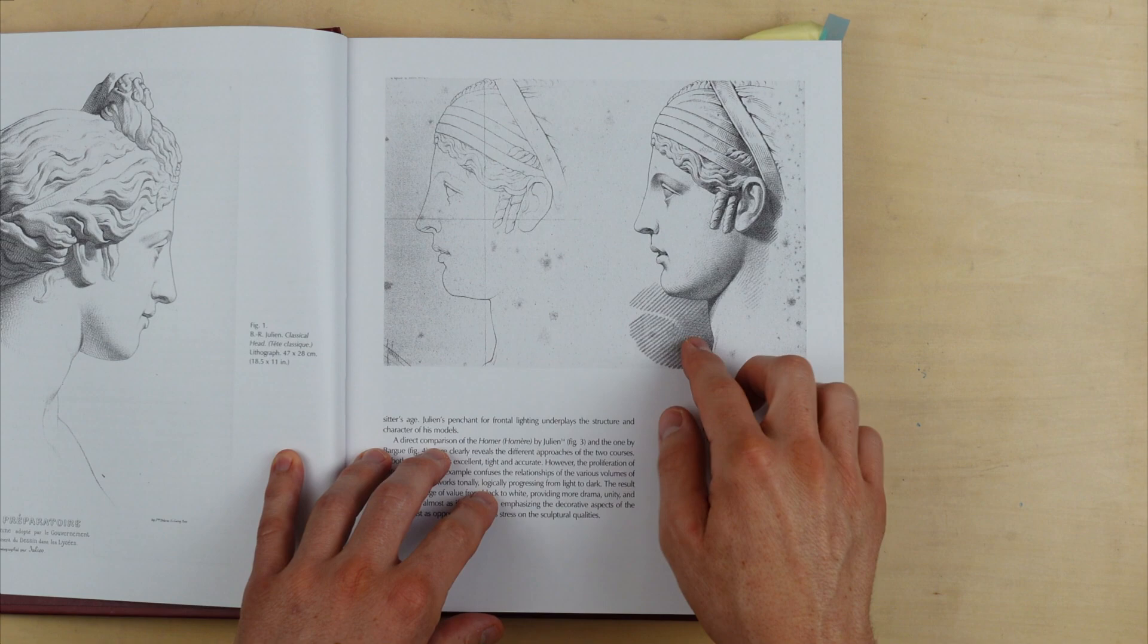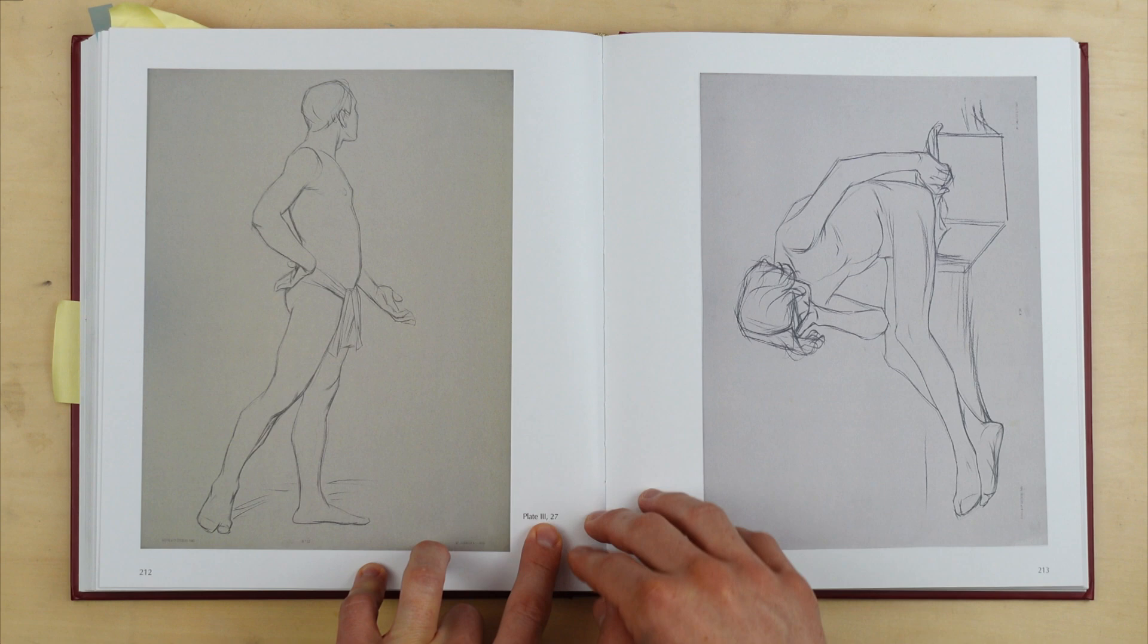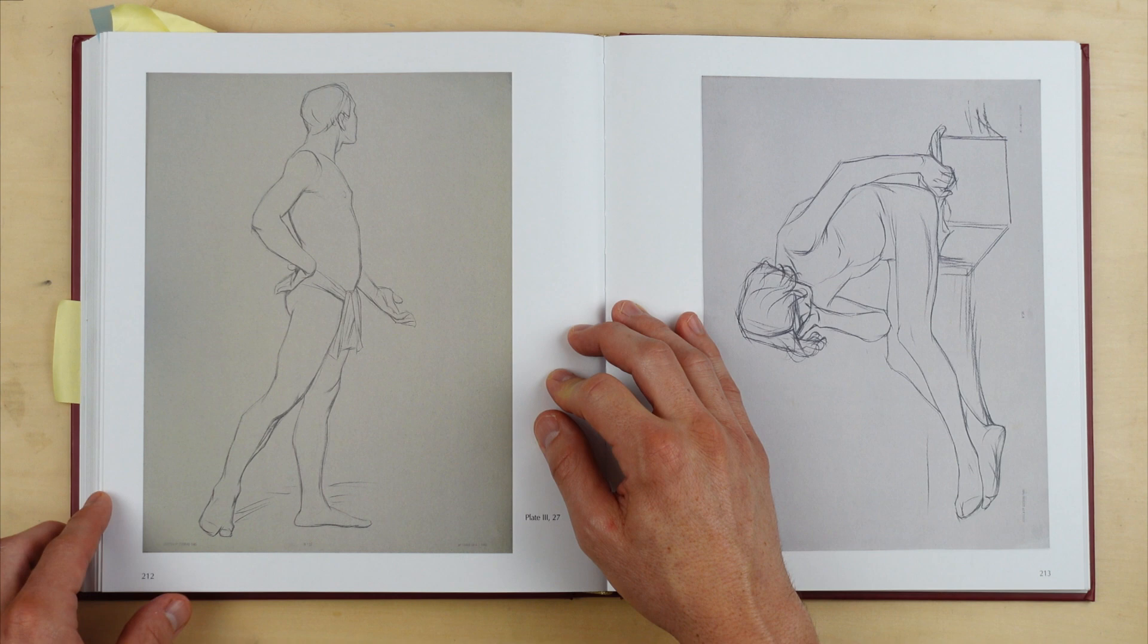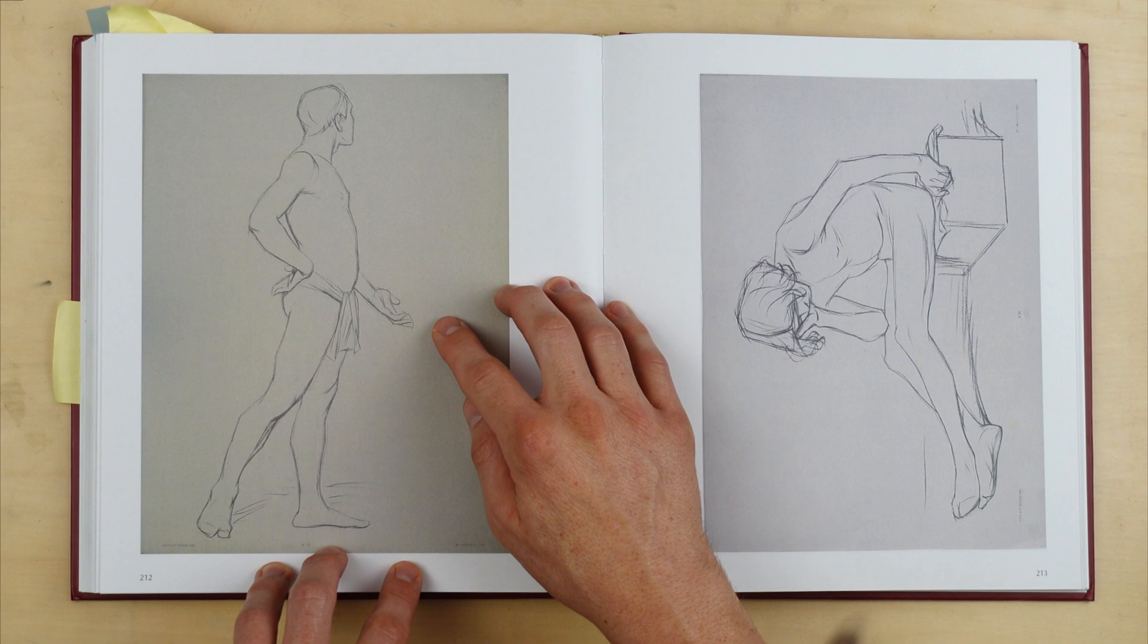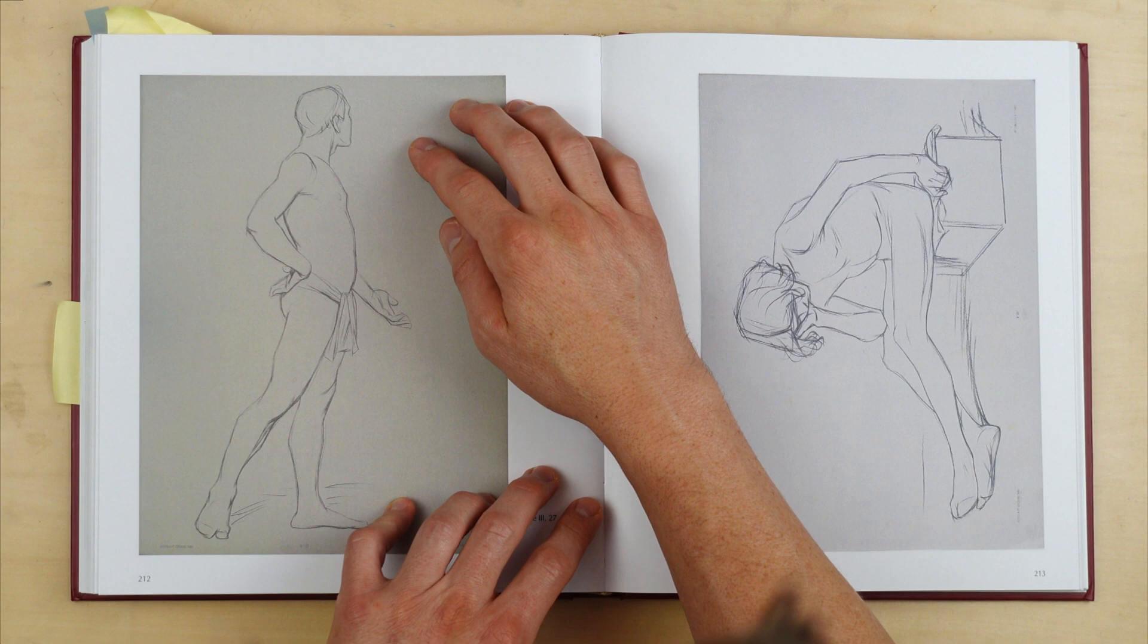I'm going to do plate Roman numeral three, number 27. If I don't mess it up really bad, I think it'll be a good practice, probably taking about 10 to 15, maybe 20 minutes depending on the size that you draw. These were meant to be drawn in the same size they were originally drawn, which was four times the size, and it was expected to take at minimum 15 hours.